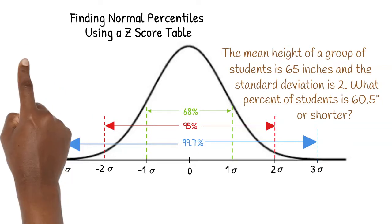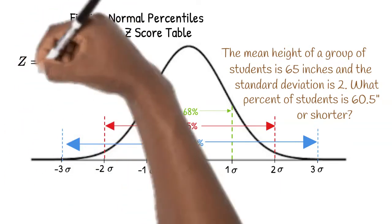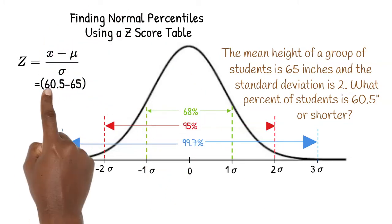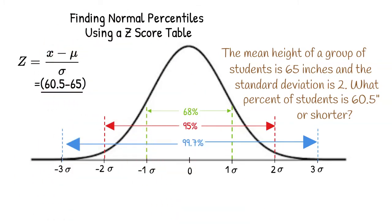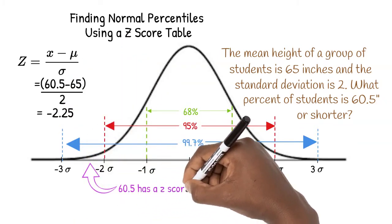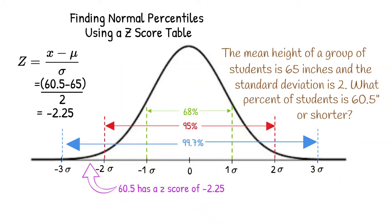We start by calculating the z-score using the formula z equals the given height minus the mean of the sample over the standard deviation of the sample. 60.5 minus 65 over 2. 60.5 has a z-score of negative 2.25.